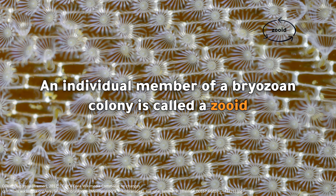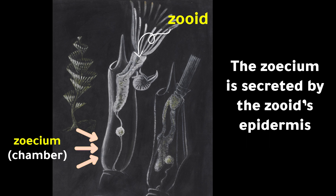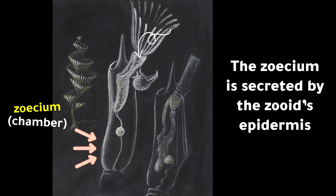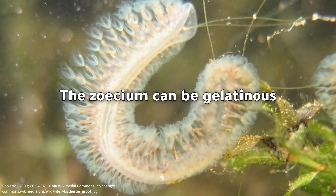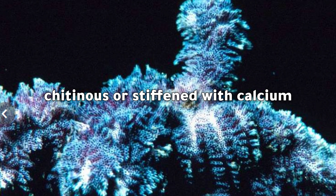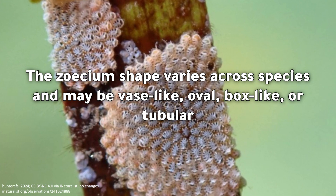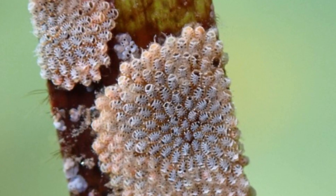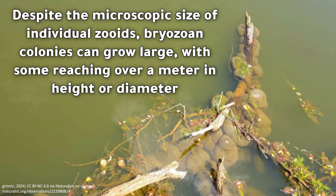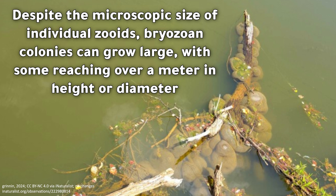An individual member of a bryozoan colony is called a zooid. Each zooid resides in a tiny chamber known as a zoecium, which is secreted by the zooid's epidermis. The zoecium can be gelatinous, chitinous, or stiffened with calcium. Its shape varies across species and may be vase-like, oval, box-like, or tubular. Despite the microscopic size of individual zooids, bryozoan colonies can grow large, with some reaching over a meter in height or diameter.